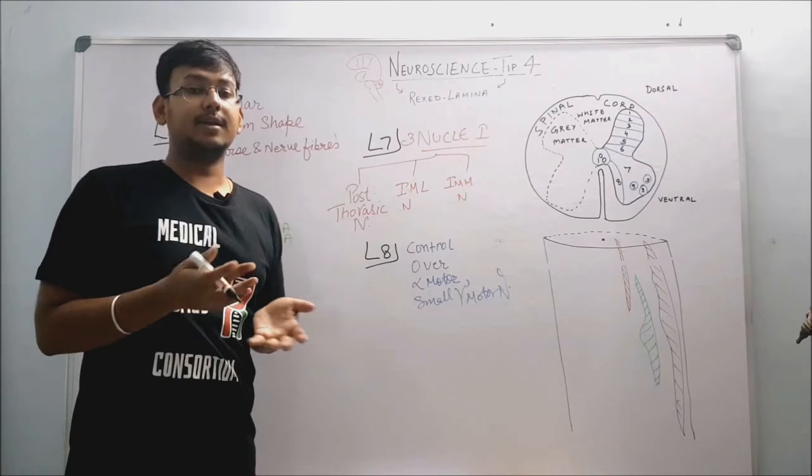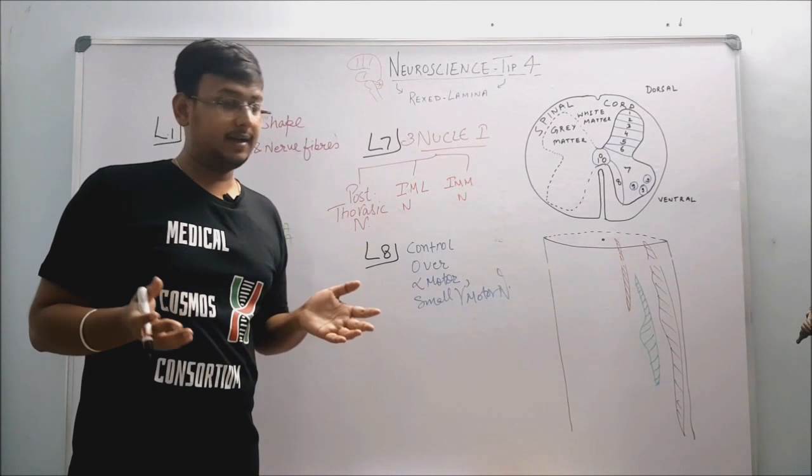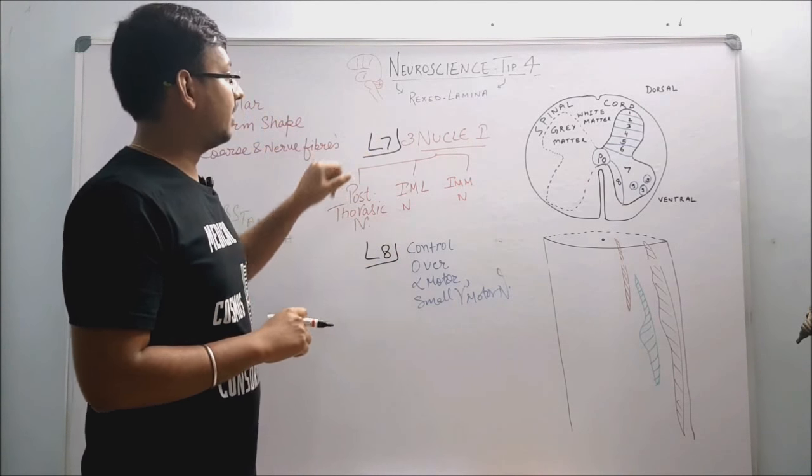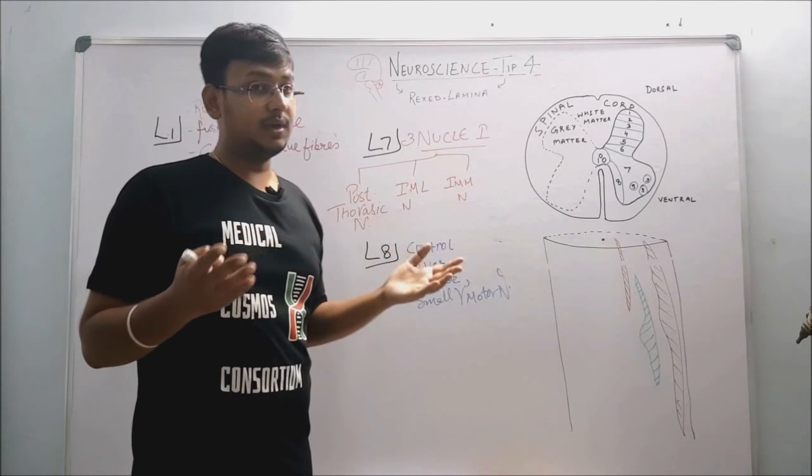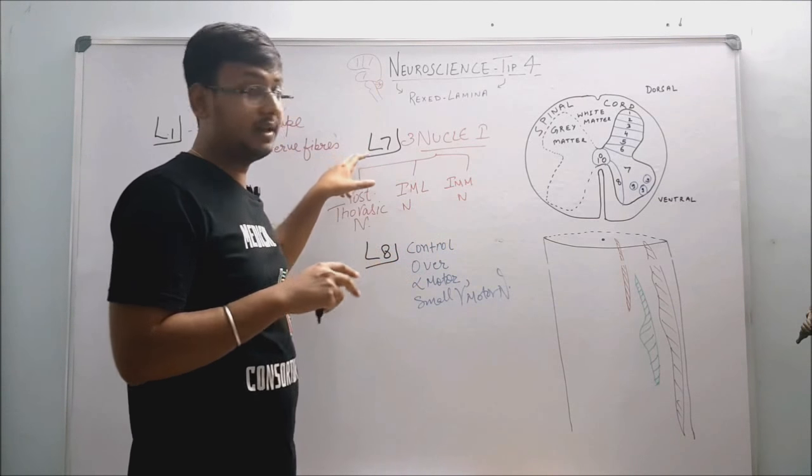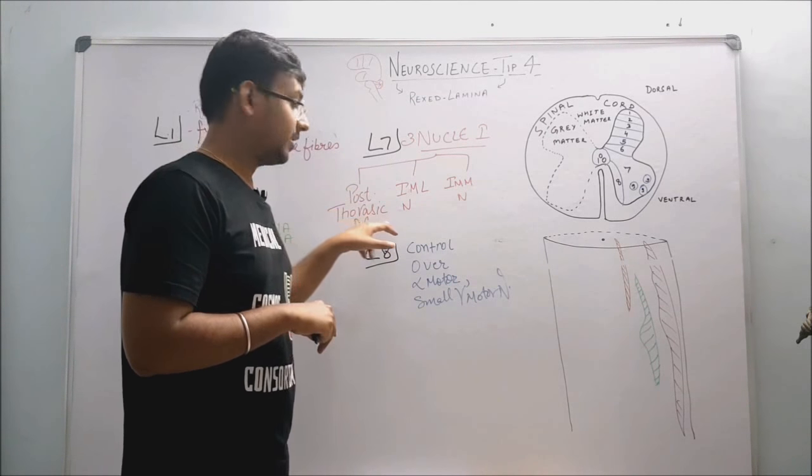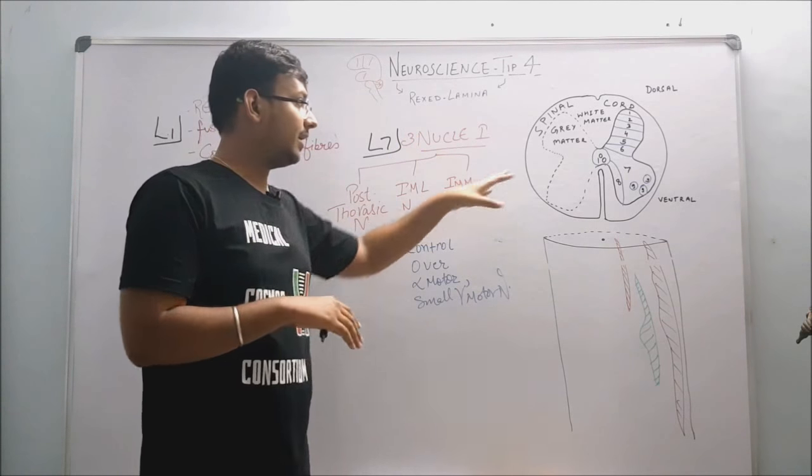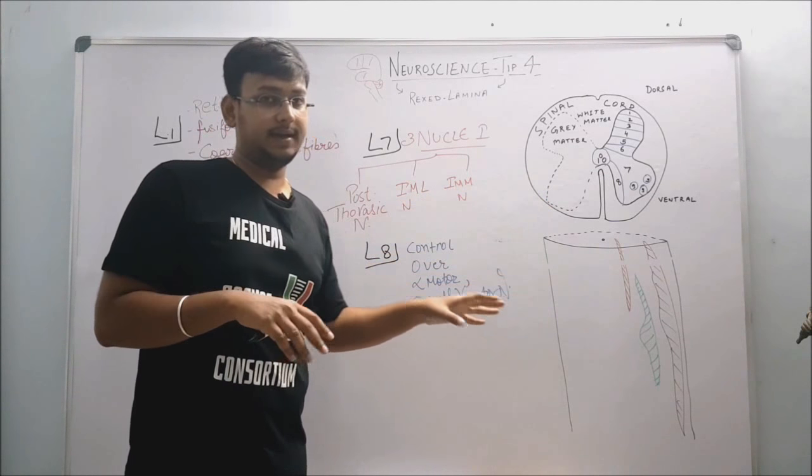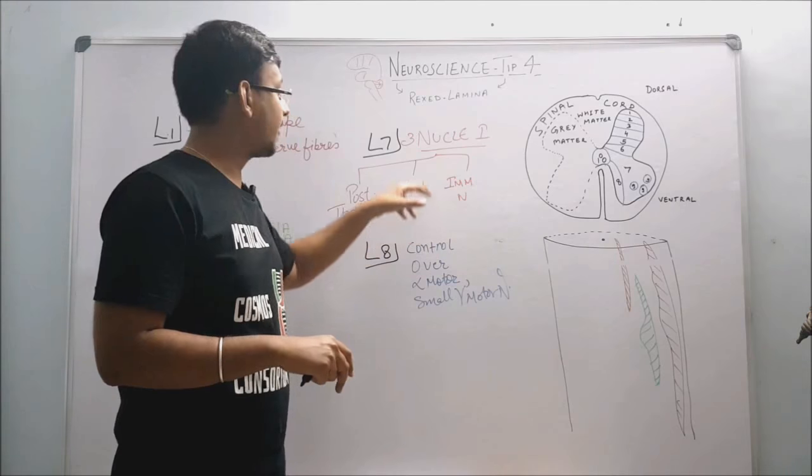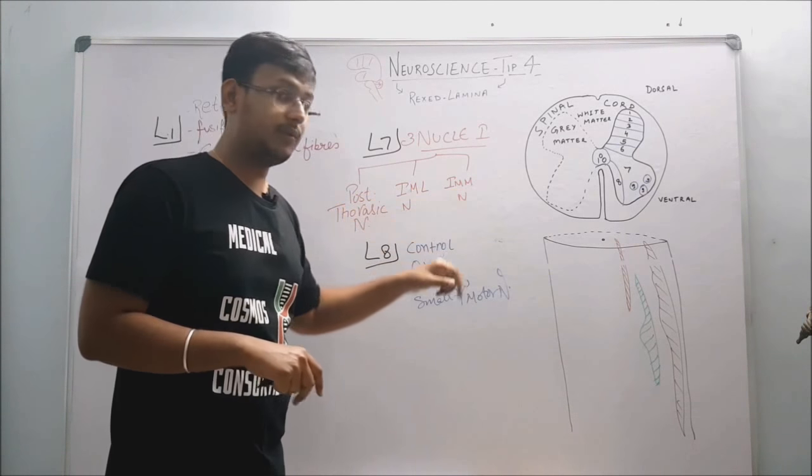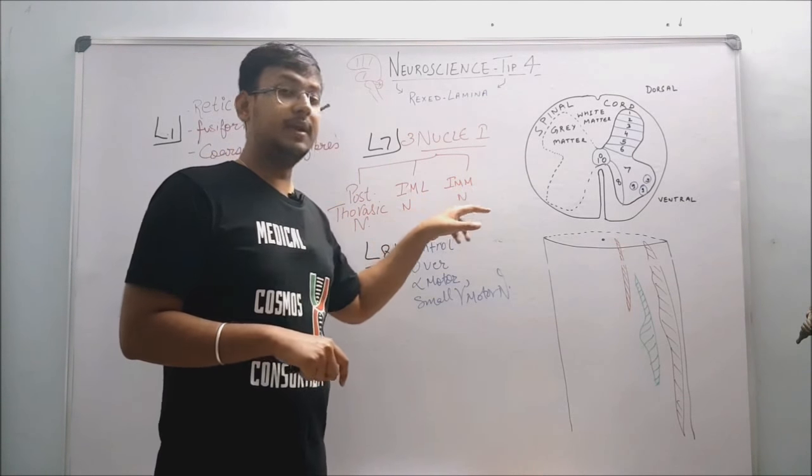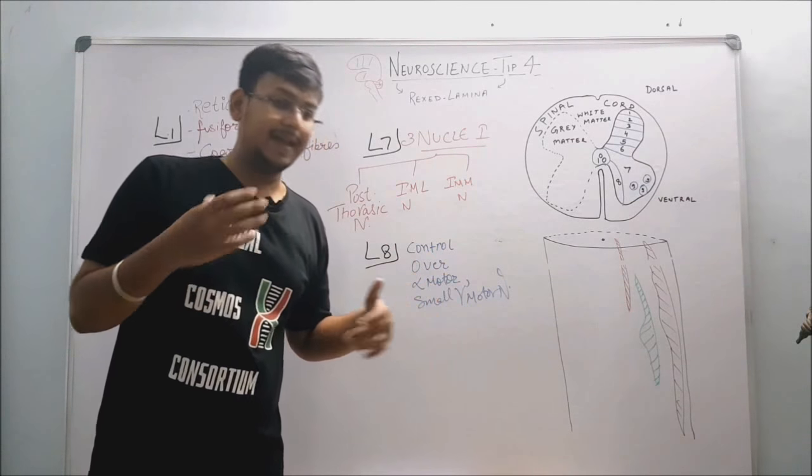And similarly, in lamina 7, we have three nuclei. Three nuclei in the lamina 7: first is posterior thoracic nucleus - these nuclei are of spinal cord only, present in gray matter - secondly, intermediolateral nucleus, and thirdly, intermediomedial nucleus. So they have many functions which is not important to list here, but this is to give you a comprehensive perspective.